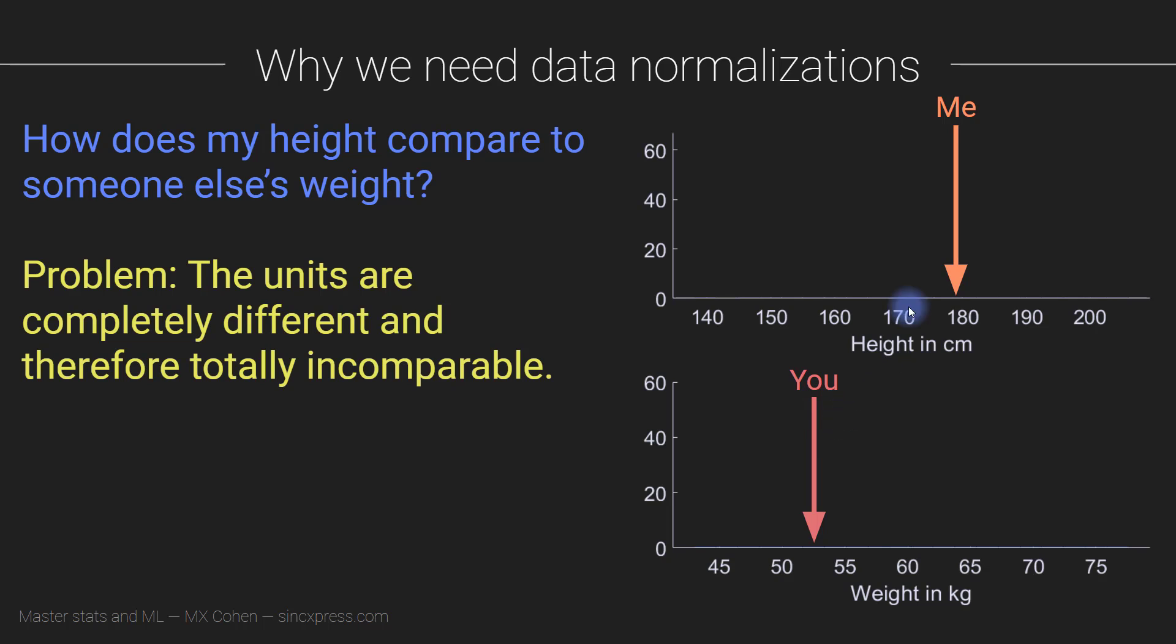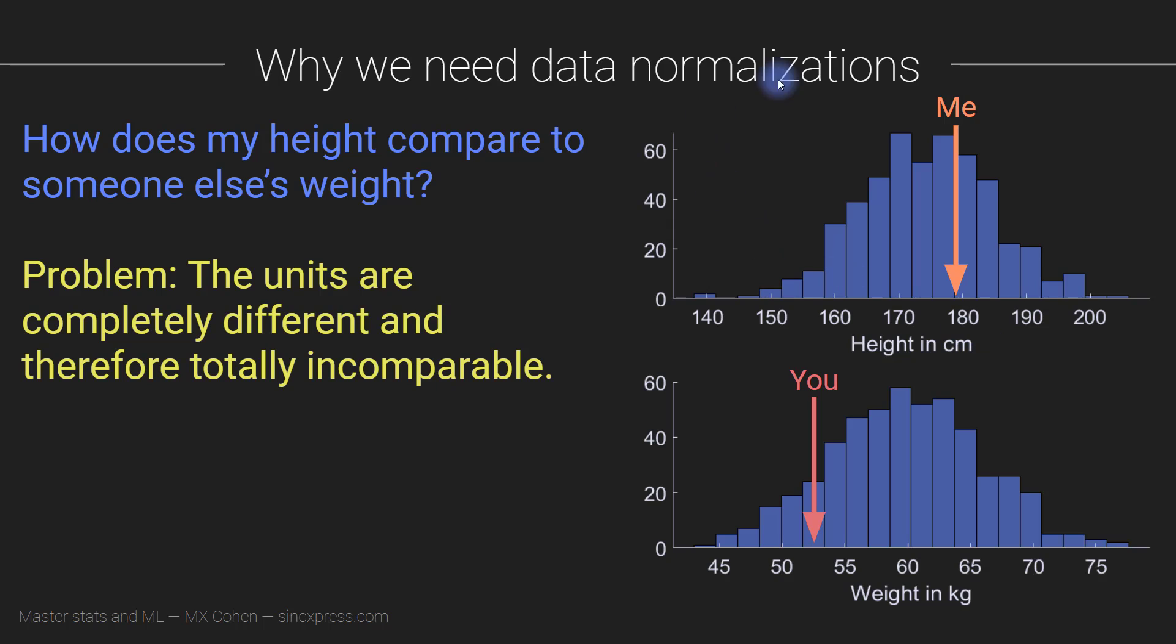And the problem is that we cannot directly compare them because they are on completely different scales. And this is a problem we often run into in statistics and also just in science in general, that we need to compare quantities that intrinsically come in very different measurement units in different scales. So we need to normalize the data or scale the data. And the approach that we use here is by normalizing data into something that is more relative rather than something that is absolute.